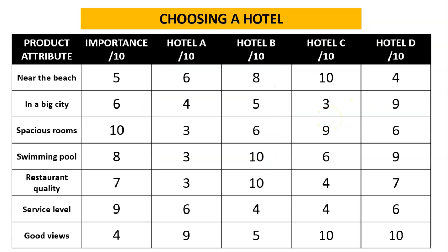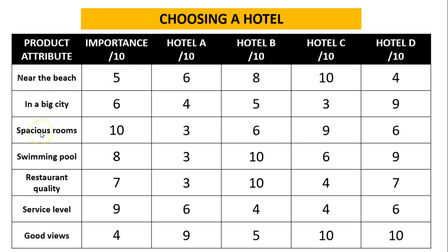Now to make sense of this, we're going to use a model we would use for a compensatory decision. As we can see, we're going to pick between four hotels for a holiday. We've listed our attributes here that are important to us, and we've ranked them — scored them in order of importance out of 10. So we want something near the beach, in a big city, spacious rooms, etc. And then each hotel is scored in our perception out of 10, so a score of 10 is perfect and a score of 3 is pretty bad in our opinion.